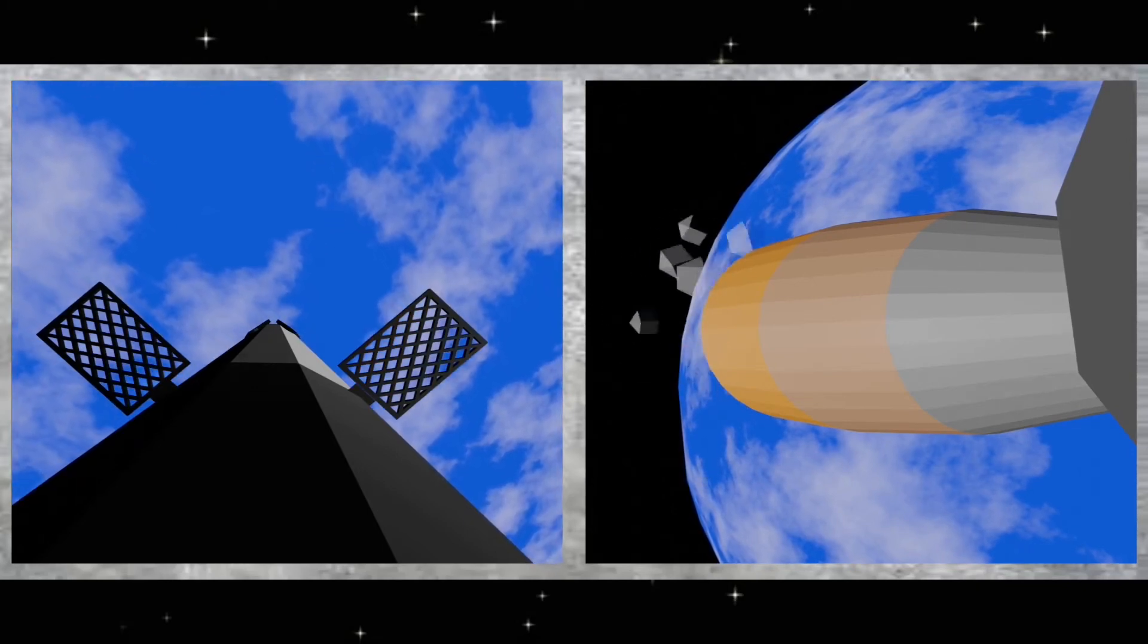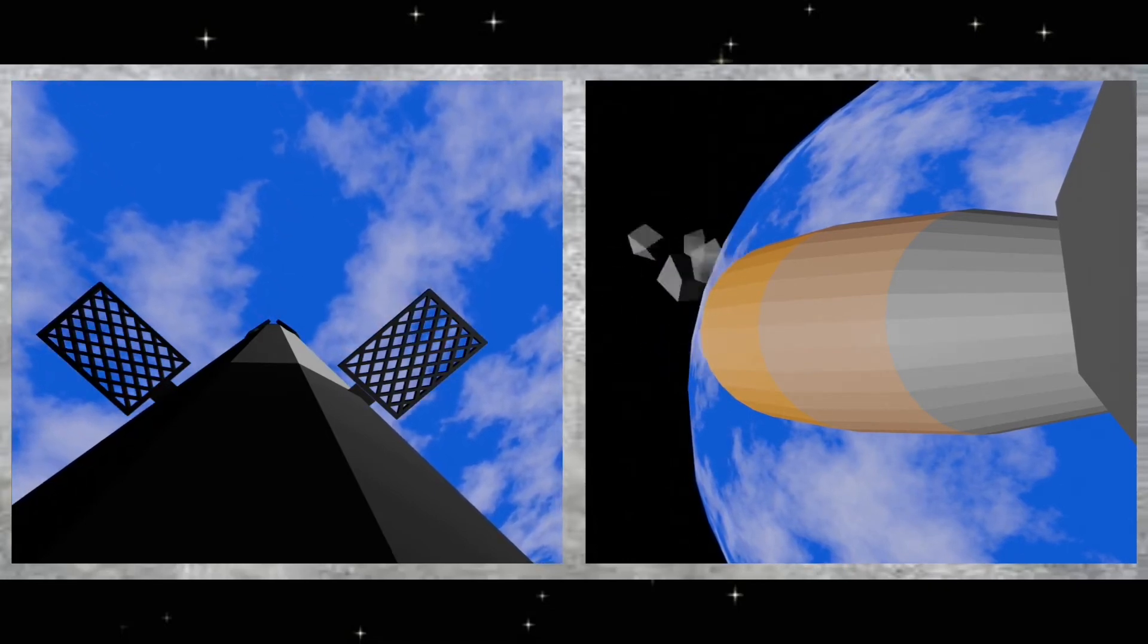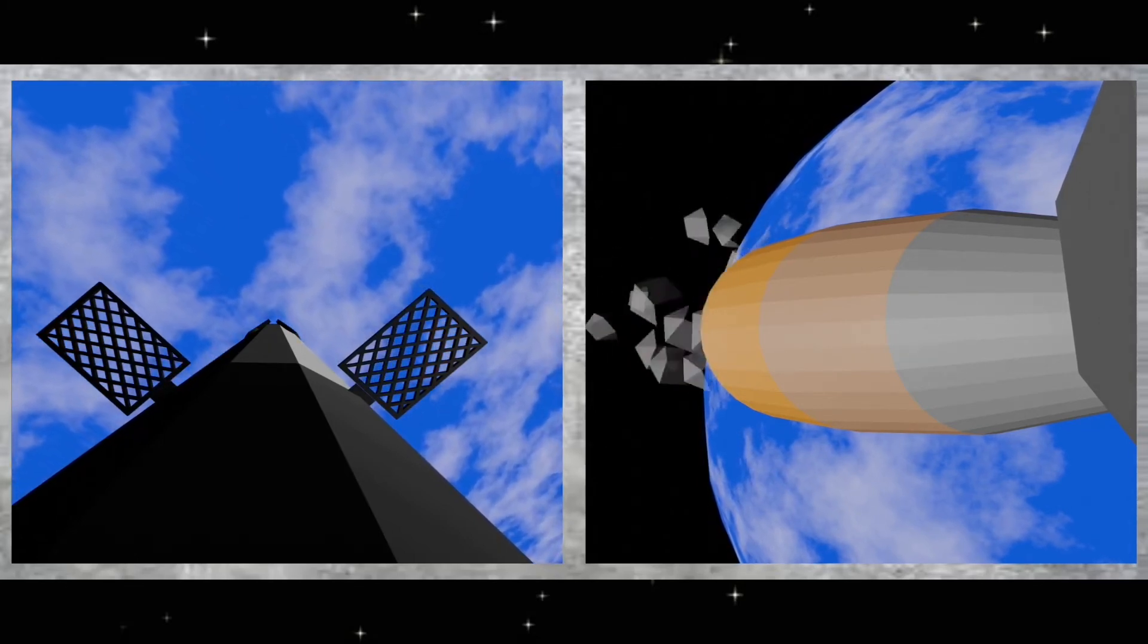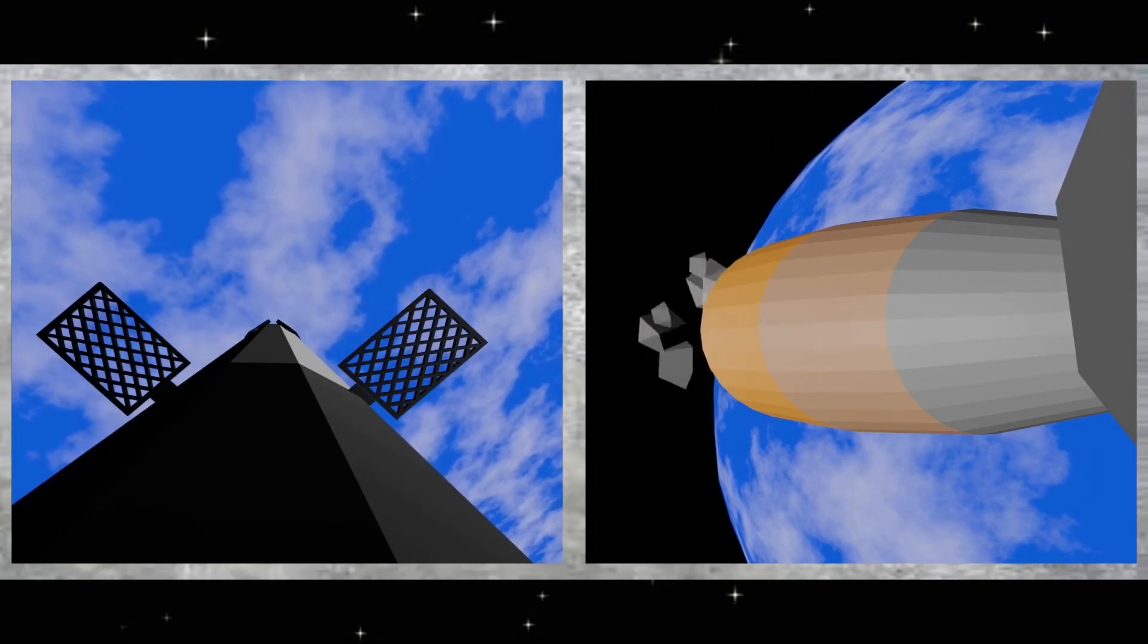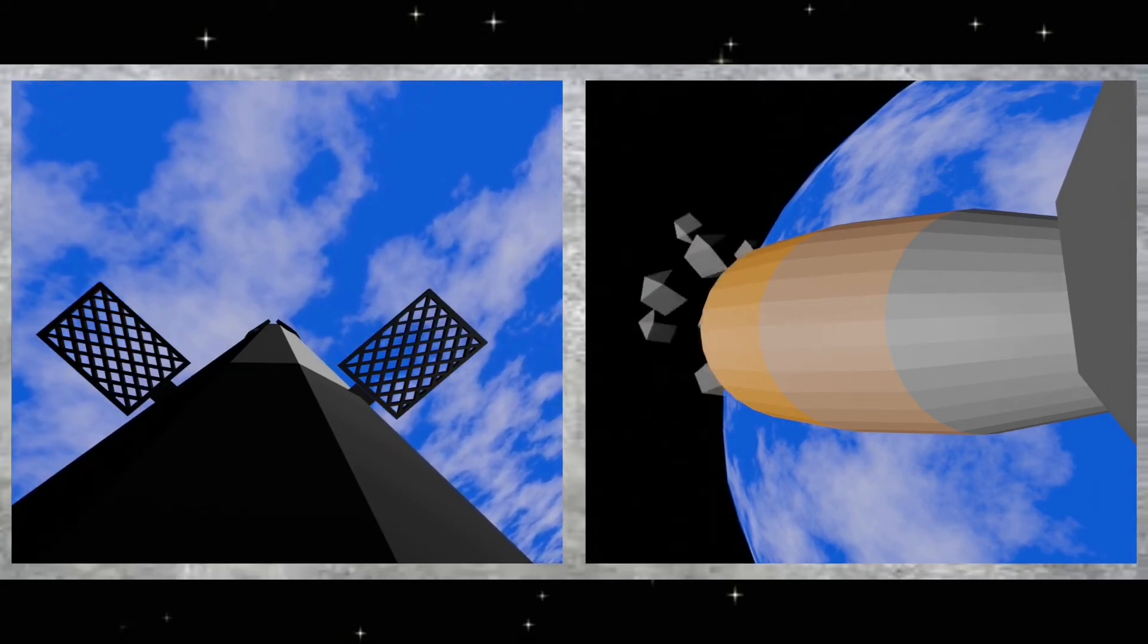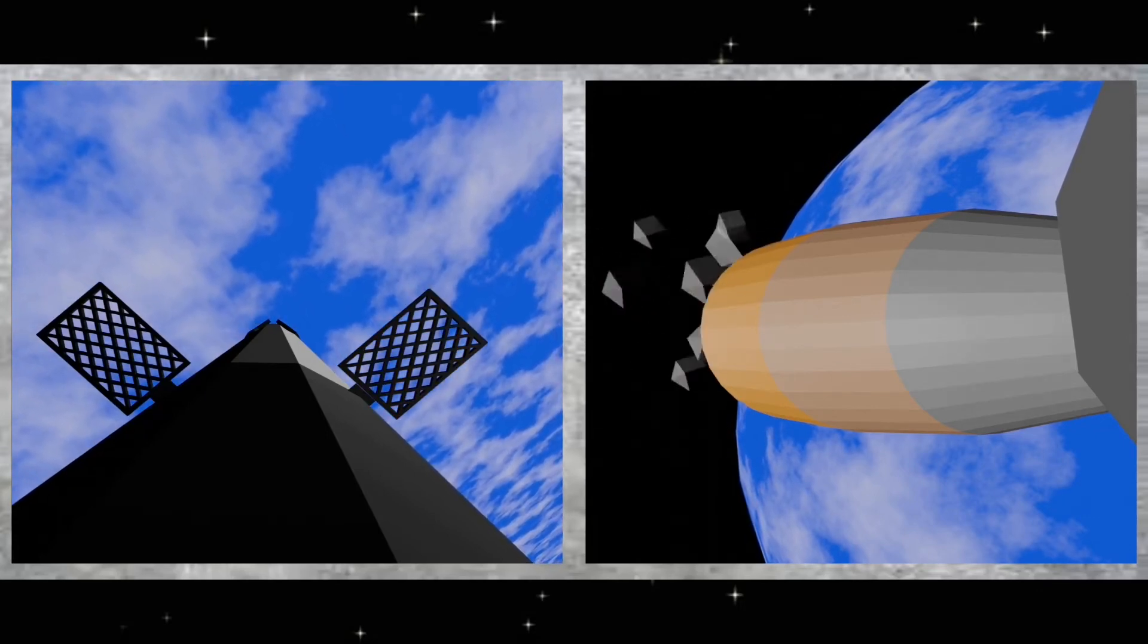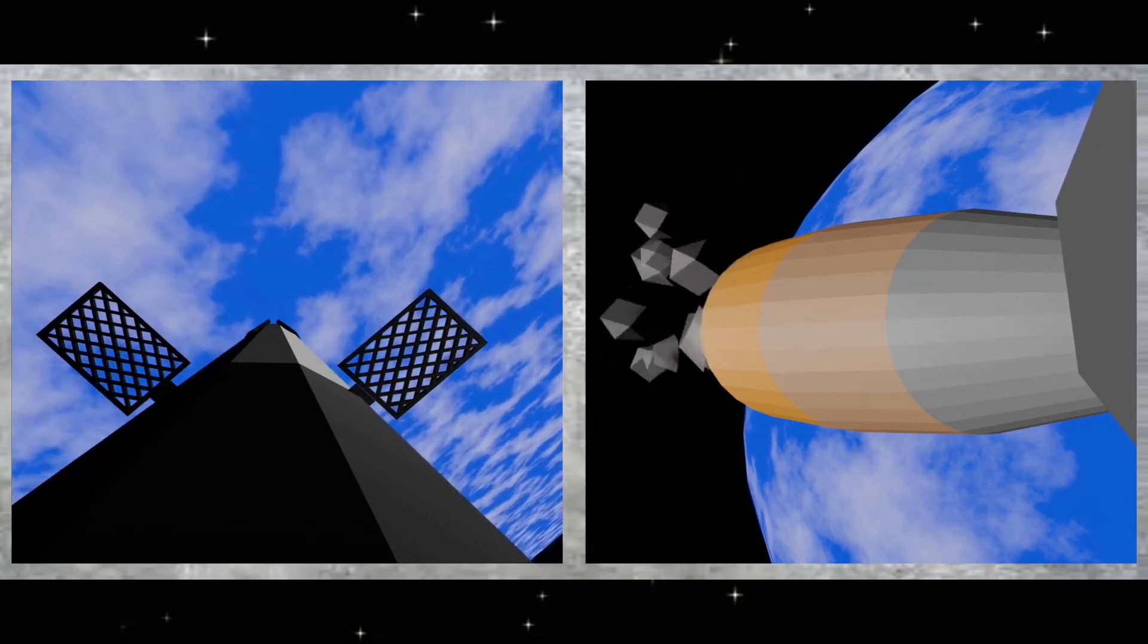You can see some periodic bursts of gas from the first stage. That is nitrogen from our attitude control systems. They help to orient the first stage as it continues to make its descent back towards Earth. And as we get closer to the Earth, you'll start to notice those honeycomb-like structures on the left-hand side of your screen start to move and pivot. Those are our hypersonic grid fins, and those help to steer the first stage back as it returns back to Earth.